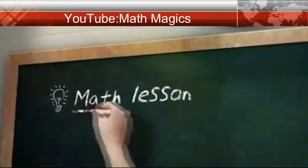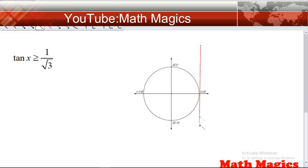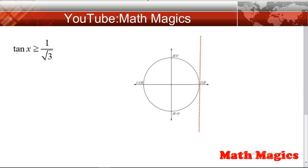Hello everyone, welcome to my YouTube channel. Today we are going to find the tangent inequality tan x is greater than 1 divided by square root of 3 on the unit circle. The red dotted line is the tangent axis. First we have to find where tangent x is equal to 1 divided by square root of 3.